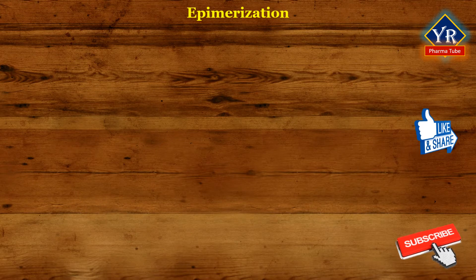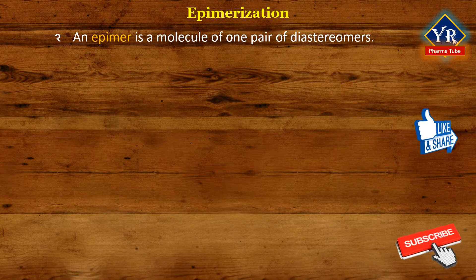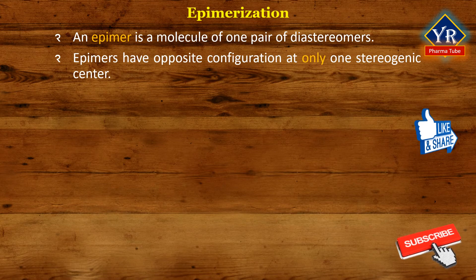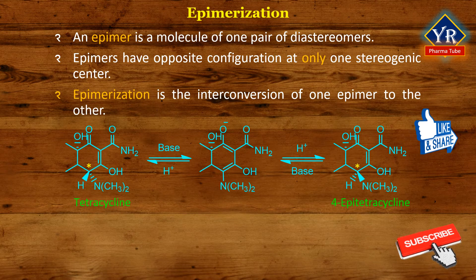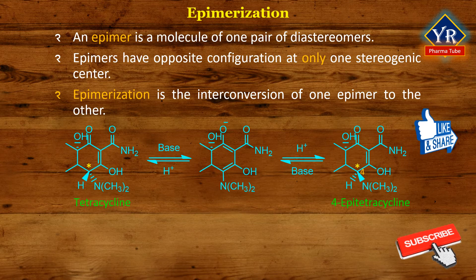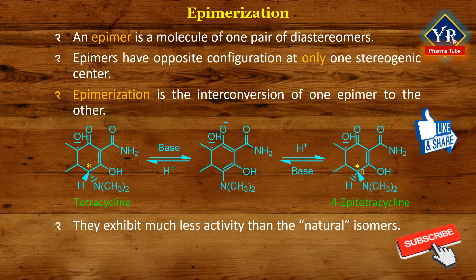Epimerization of tetracyclines. In stereochemistry, an epimer is a molecule of one pair of diastereomers. The two epimers have opposite configuration at only one stereogenic center out of at least two; all other stereogenic centers in the molecules are the same. Epimerization is the interconversion of one epimer to the other, resulting in a diastereomer. The classical example in medicine is tetracycline. In acidic conditions around pH 4, tetracycline readily undergoes epimerization at position 4 and an inactive 4-epi-tetracycline is produced, which on dehydration forms 4-epi-anhydrotetracycline, a highly toxic product. This toxic compound can also be formed from acid-catalyzed dehydration of tetracycline via anhydrotetracycline. The figure shows the process of epimerization and dehydration of tetracycline.